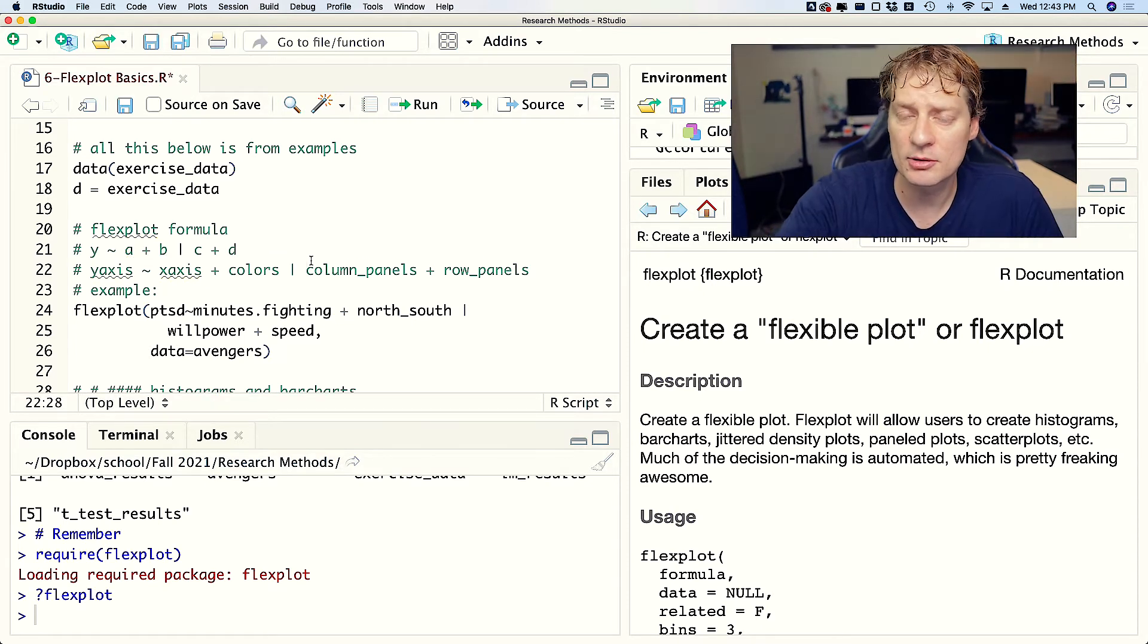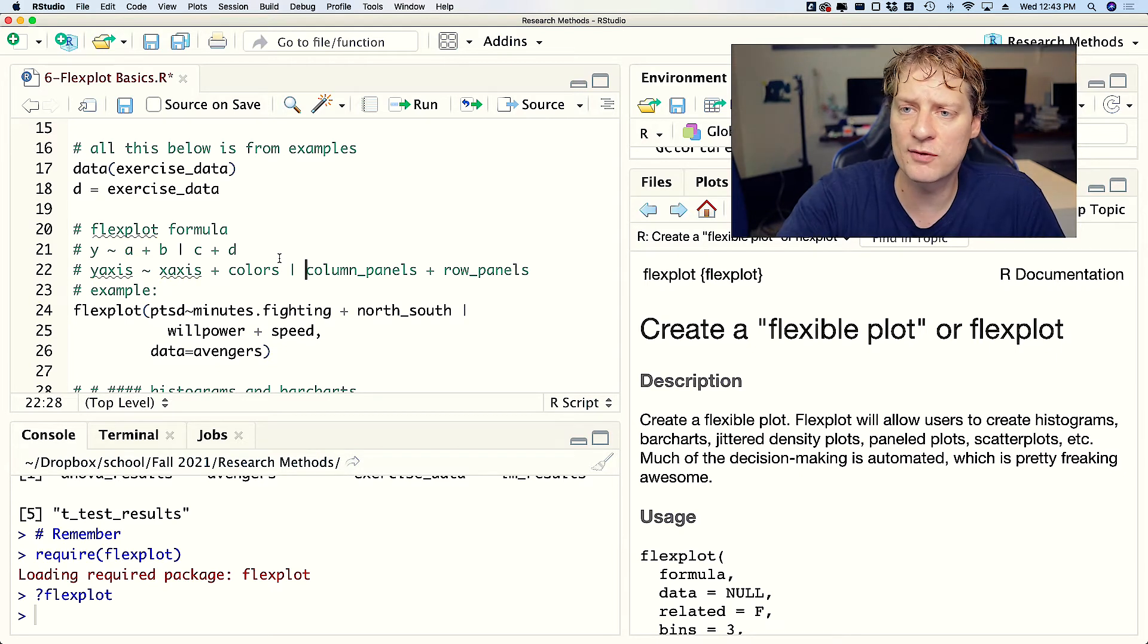The critical feature of Flexplot is a Flexplot formula. That is how you specify how you want your visual to look. The basic way that it is done is y tilde a plus b vertical pipe c plus d.